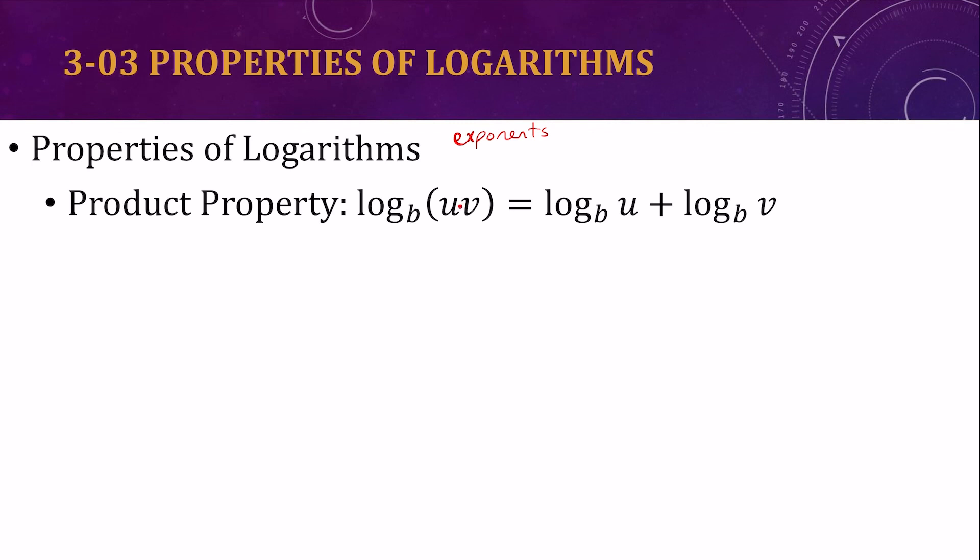When you multiply with the same base, you add the exponents. So product property, if you're multiplying inside the logarithm, you can rewrite it as adding two separate logarithms.